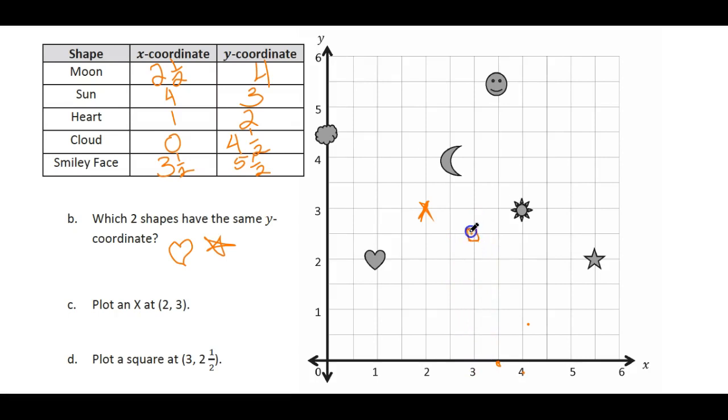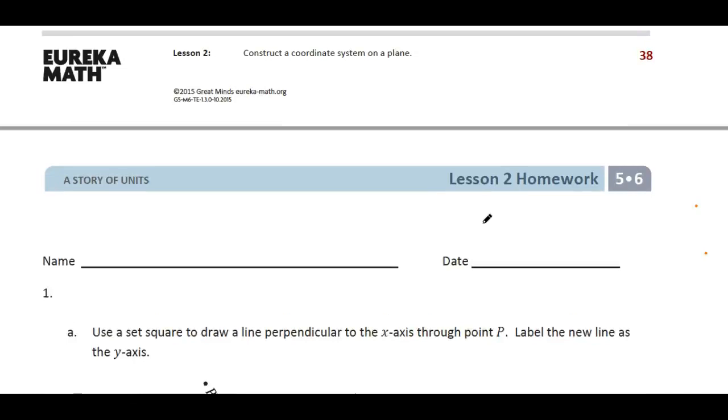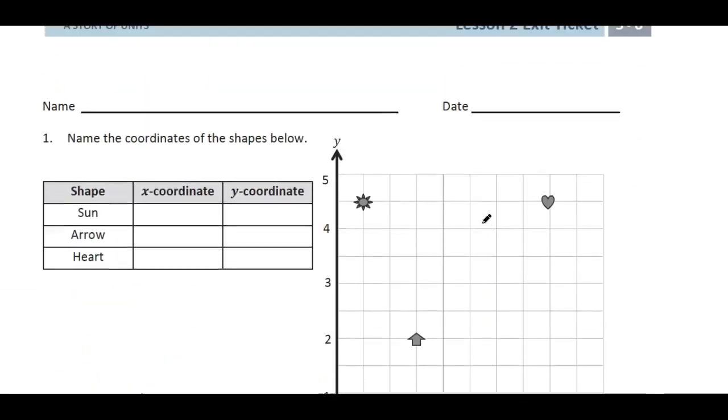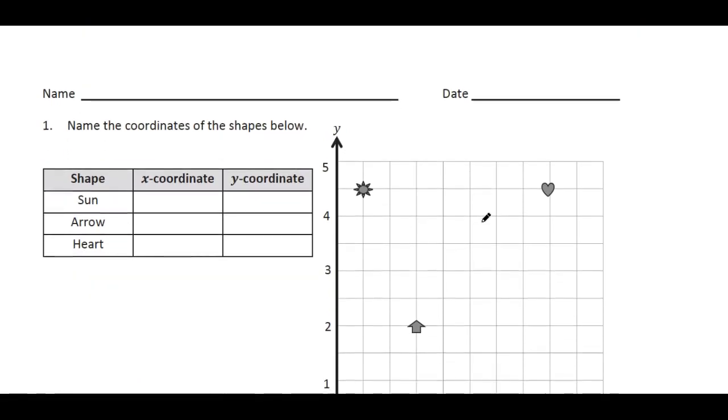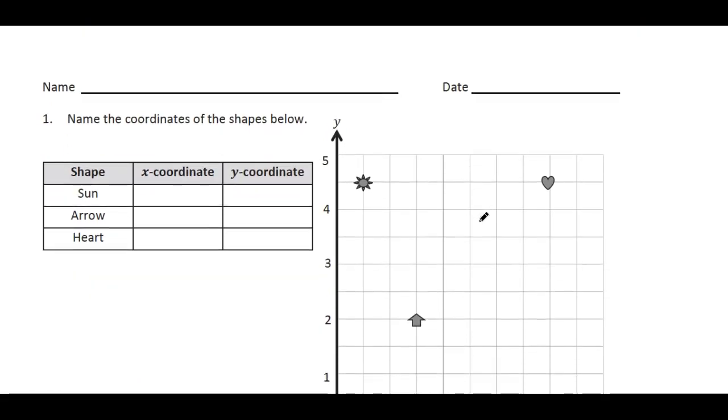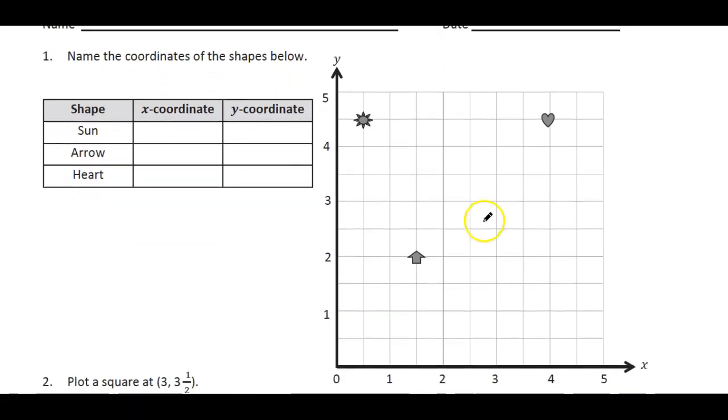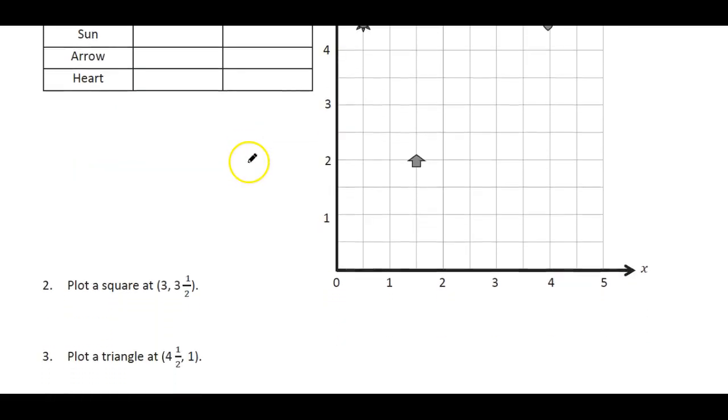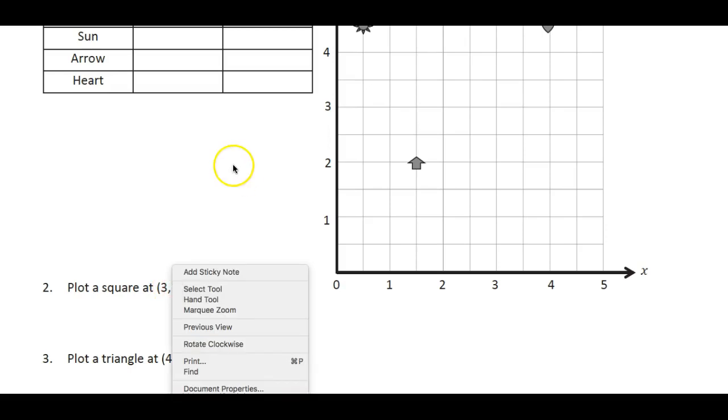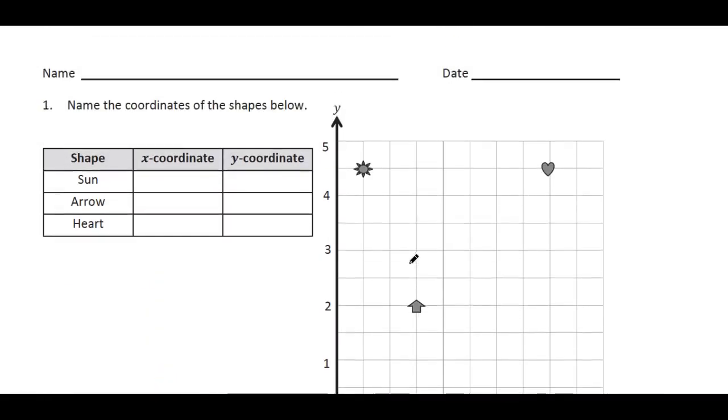Okay, now it's going to be your turn. We're going to cruise on up here to the exit ticket and I have a photocopy of this and I've given you each one of them. So here you go, name the coordinates of the shapes below. So on your chart, you're going to check it out. Here's your sun, you're going to say where is it on the x and then how high does it fly? Do the same for your arrow and your heart. And then it asks you to actually do some plotting yourself. Remember, the very first one is the x, second one is the y, and that's how you find them. And I will see you tomorrow.